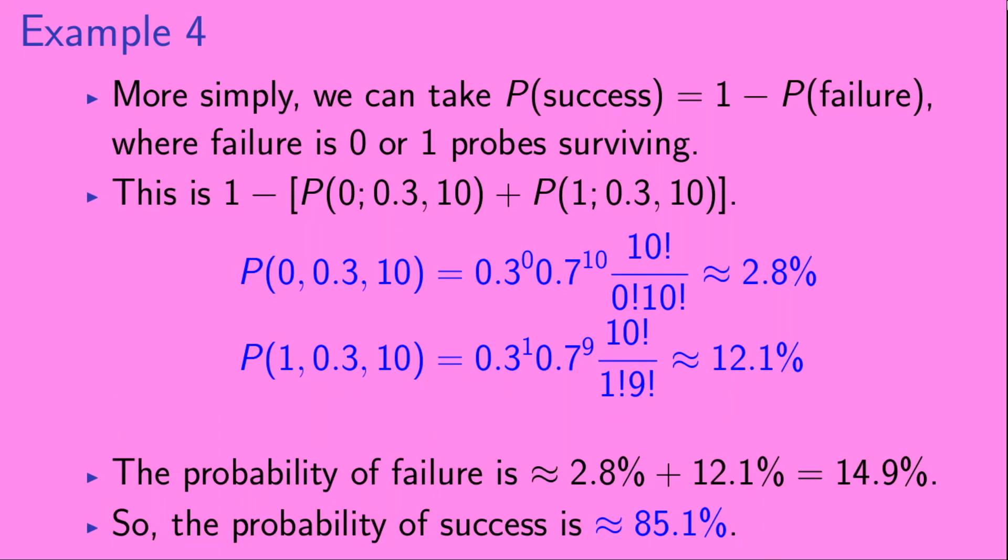More simply, we can take the probability of success to be 1 minus the probability of failure, where failure is defined as 0 or 1 probes surviving. This is equal to 1 minus the probability that 0 probes survive plus the probability that 1 probe survives. Here we show the probability of 0 probes surviving, that's about 2.8%, and the probability of 1 probe surviving, that's about 12.1%. So the probability of failure is about 14.9%. This means that the probability of success is about 85.1%.